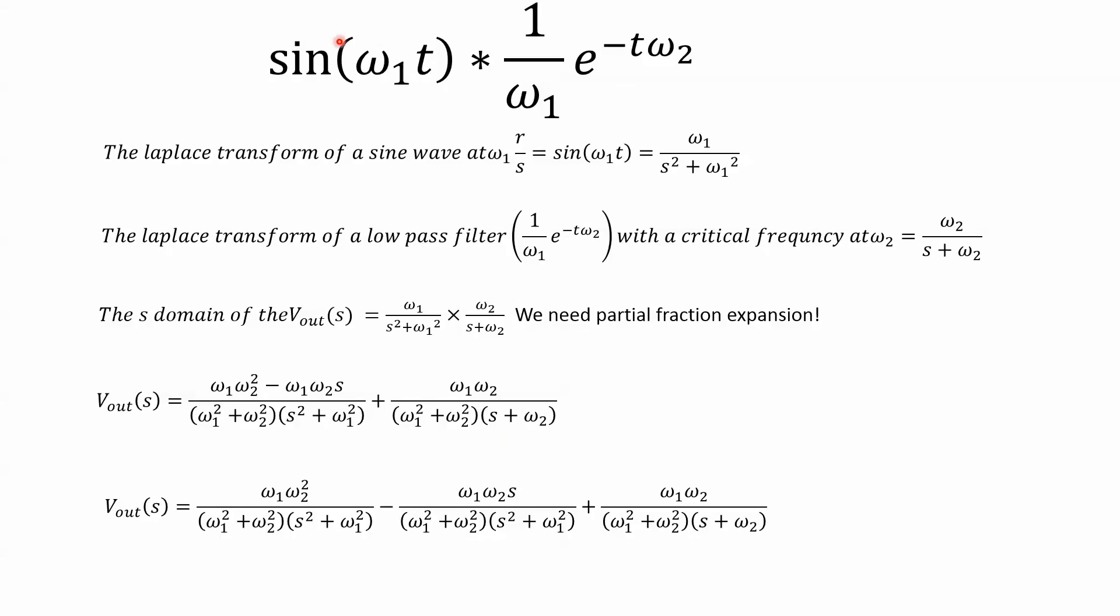So let's look at a sine wave and a low-pass filter. We're going to convolve a sine wave with ω₁ times the impulse response of a low-pass filter that has a critical frequency ω₂. So we take the Laplace transform of that sine wave of ω₁ in radians per second, and we just get the frequency we're at divided by s² plus the frequency we're at squared. The Laplace transform of a low-pass filter with a critical frequency at ω₂ is just ω₂ divided by the sum of s and ω₂.